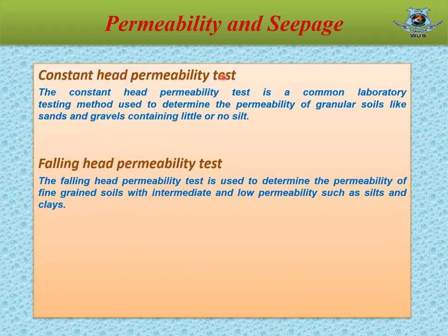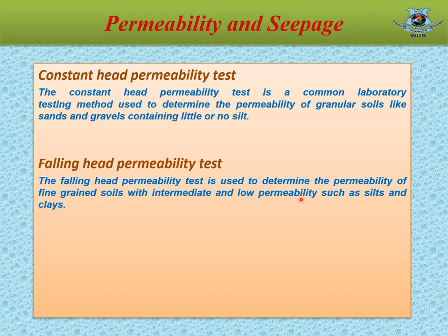The constant head permeability test is a common laboratory testing method used to determine the permeability of granular soils like sands and gravels containing little or no silt. The falling head permeability test is used to determine the permeability of fine-grained soils with intermediate and low permeability, such as silt and clays.